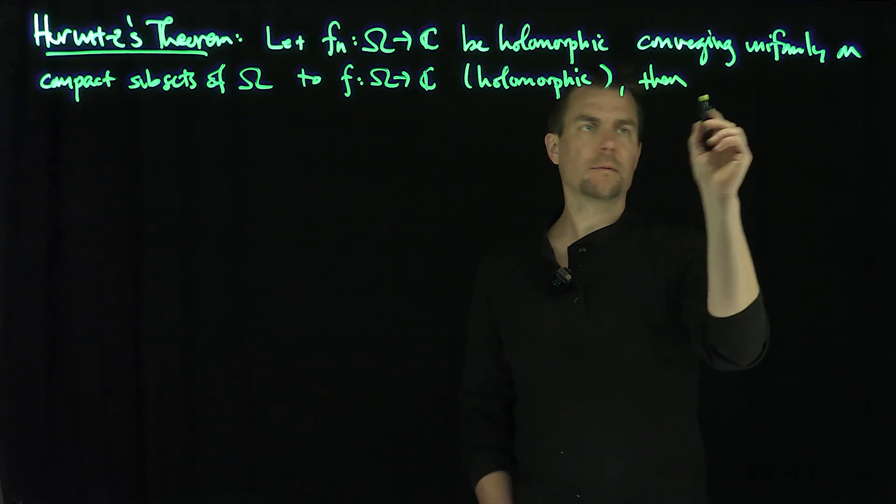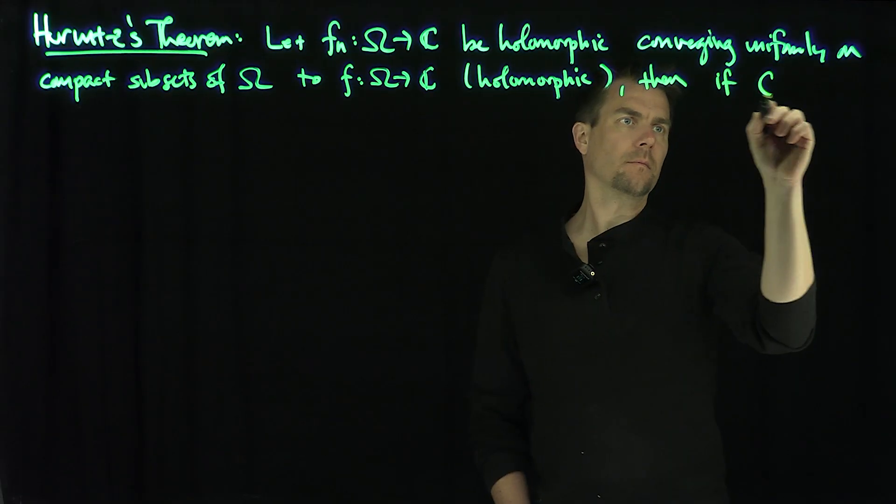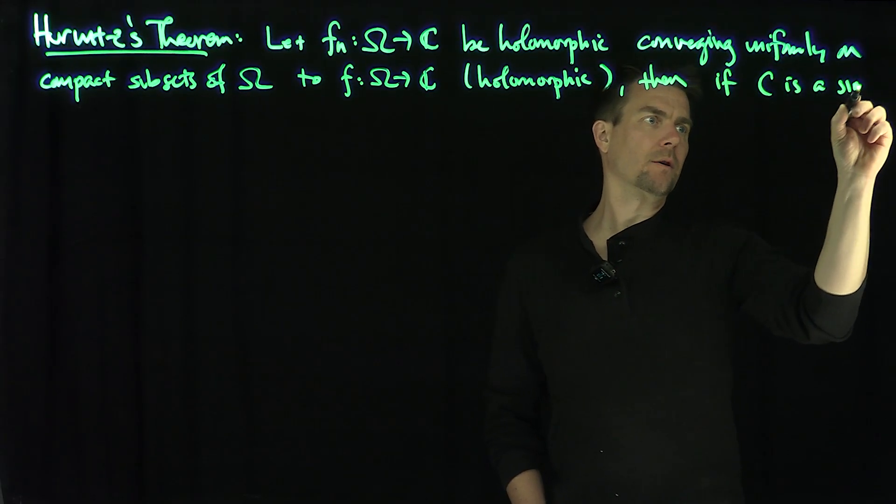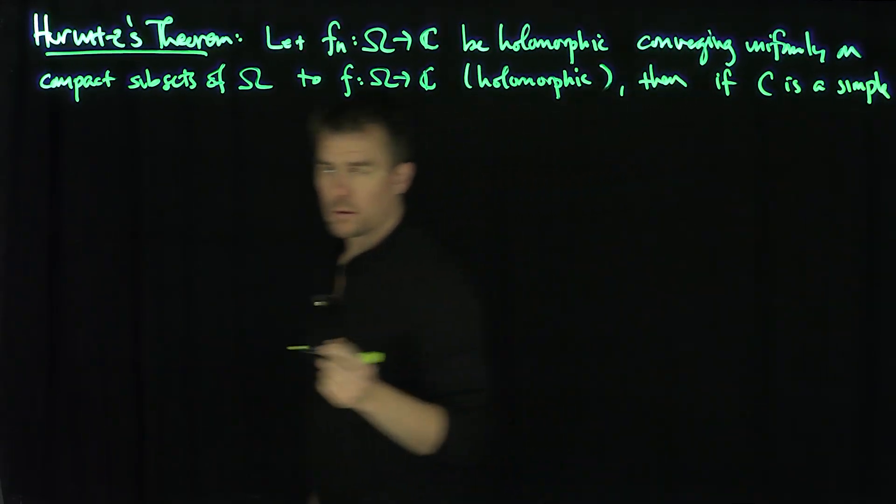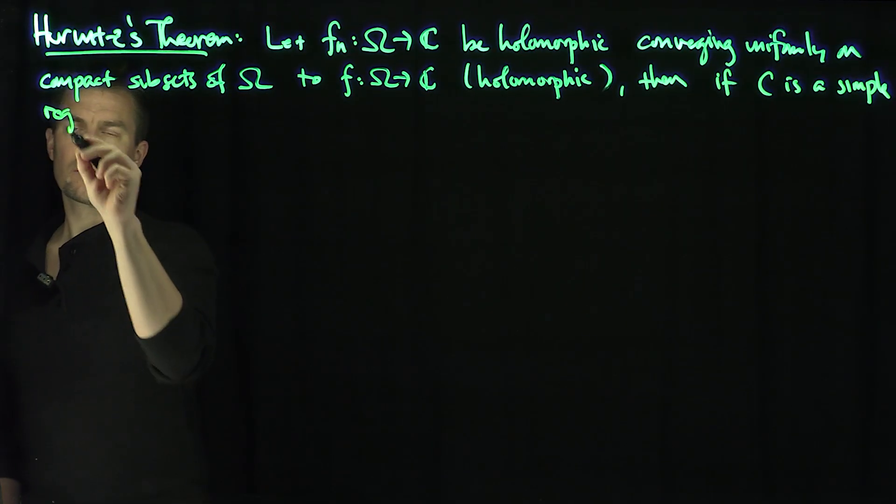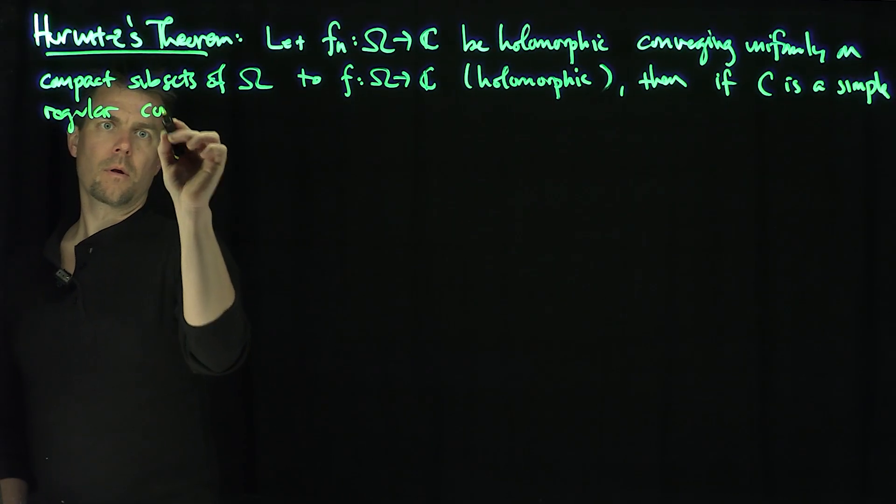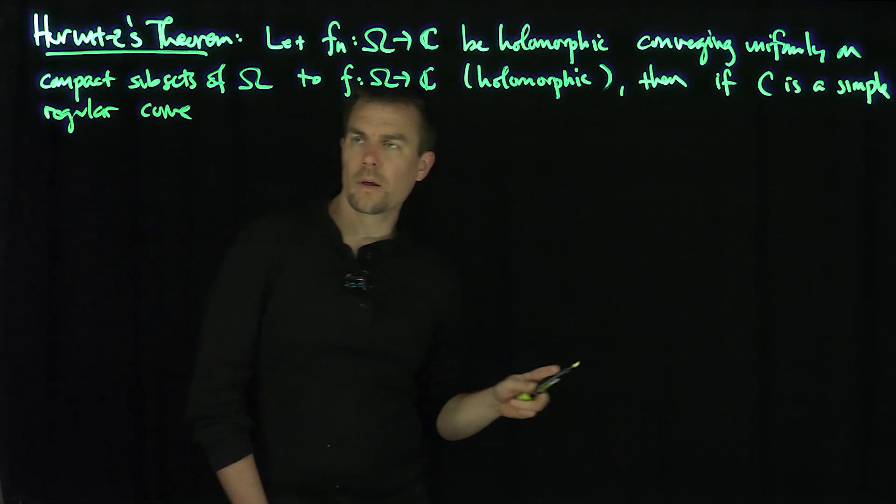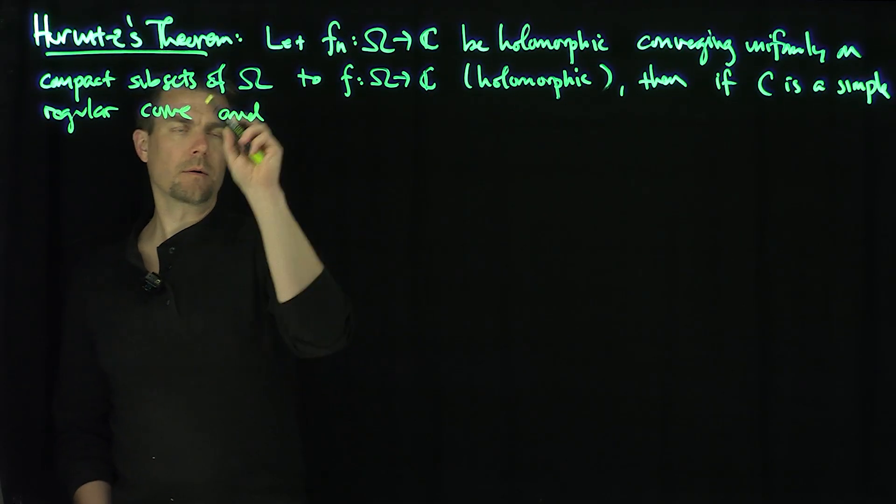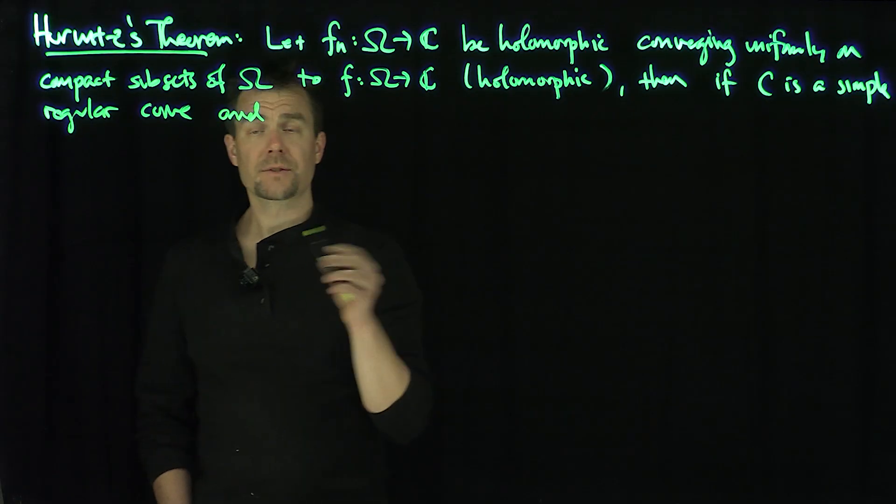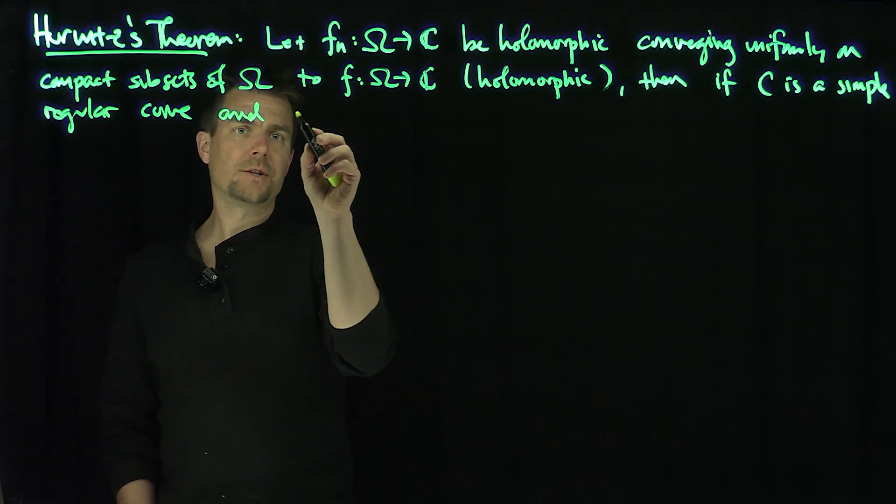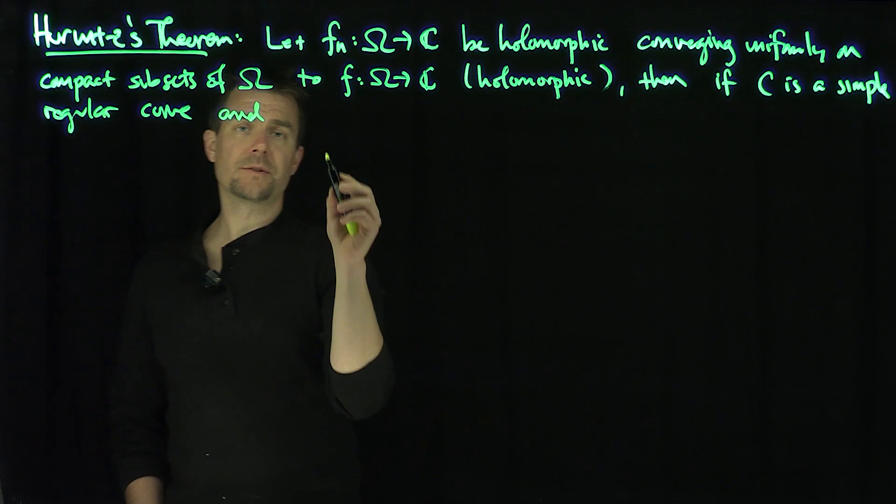if C is a simple regular curve so it's closed, that means the index is either one or zero, and we look at the interior of C and for points on the interior of C